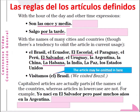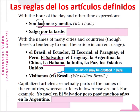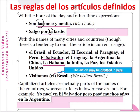We continue on the rules with the hours of the day and other time expressions. For example: son las once y media — they are 11 and a half. We use 'las once' because 'once' is 11 and it is plural feminine. Son las once y media — it is 11:30. Example 2: salgo por la tarde — I am going out in the afternoon. We use the article 'la tarde' — the afternoon.